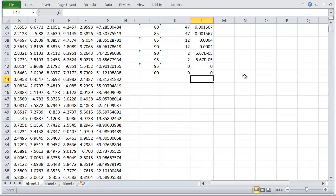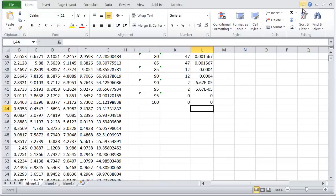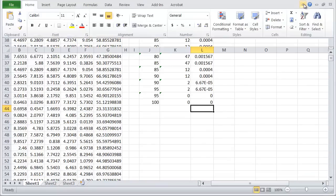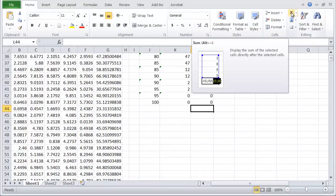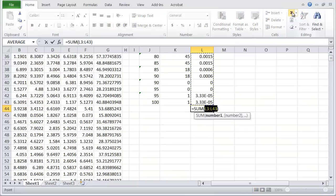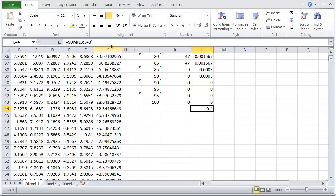Right so what we need to do if we're going to check that this probability density is working correctly we need to take a sum and one way to do that is I need the ribbon back so that's what I did here I got it back by clicking on the little arrow and I can click on sum and what sum does is it takes the sum of all those numbers so let's just see what that is okay it's 0.4.